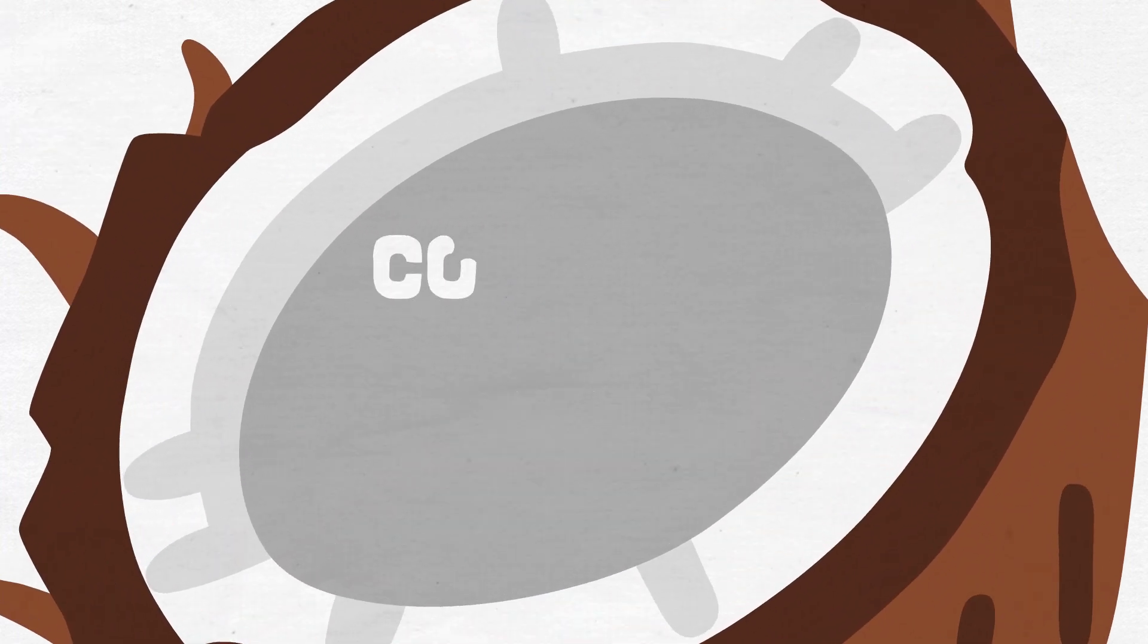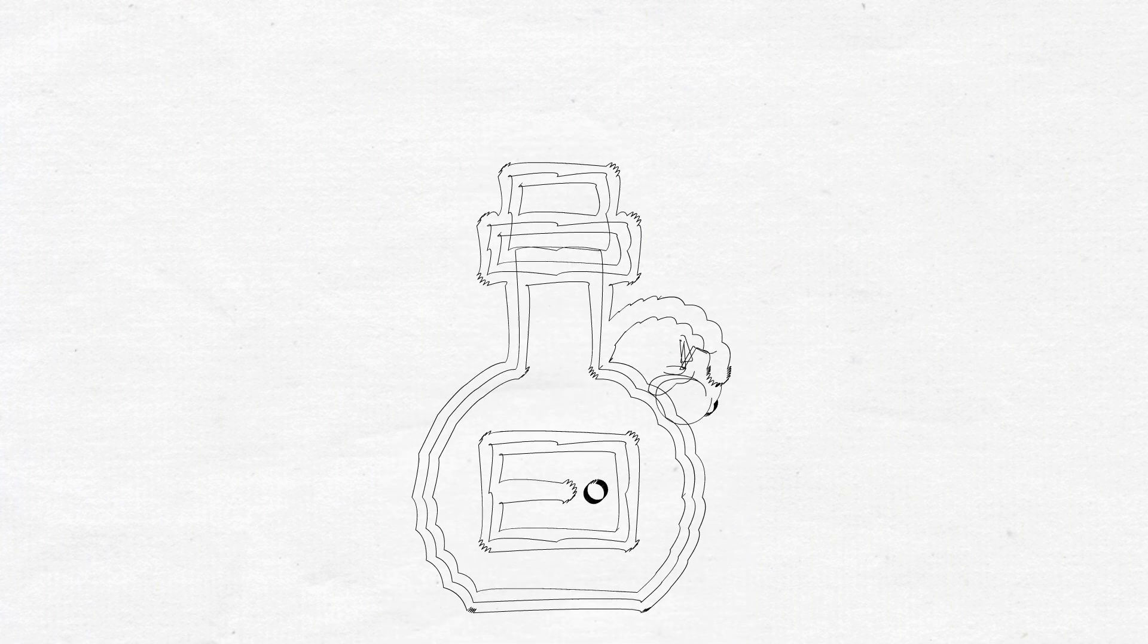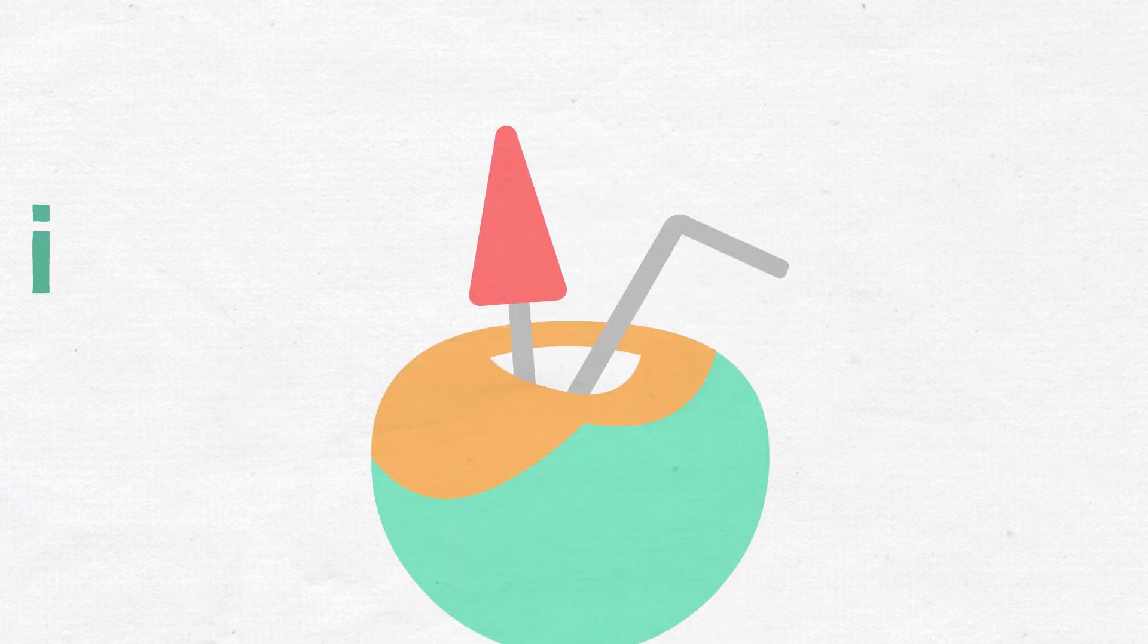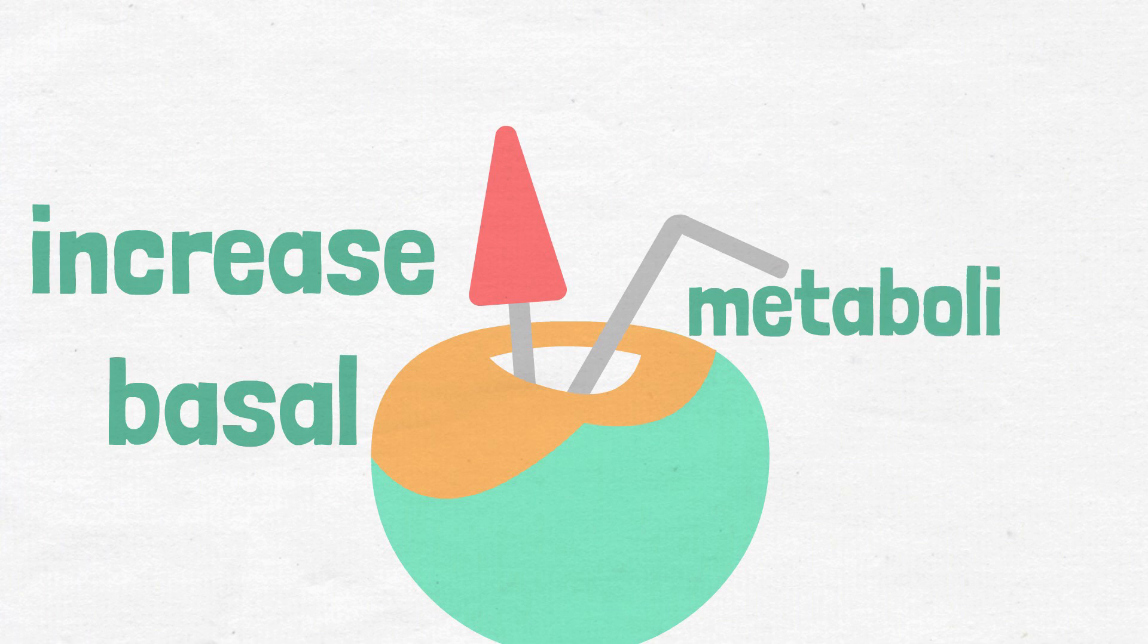Number two: using coconut oil in the diet. Using coconut oil instead of other oils in some meals can increase basal metabolism by five percent and help lose weight. Number three: eating enough protein.